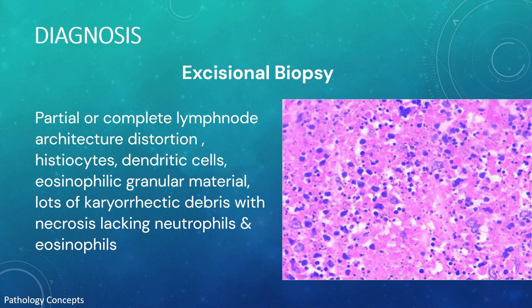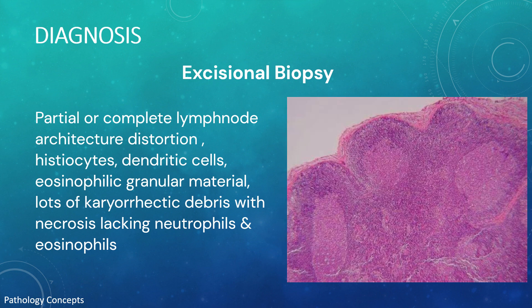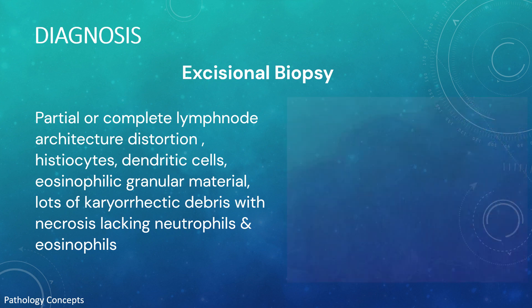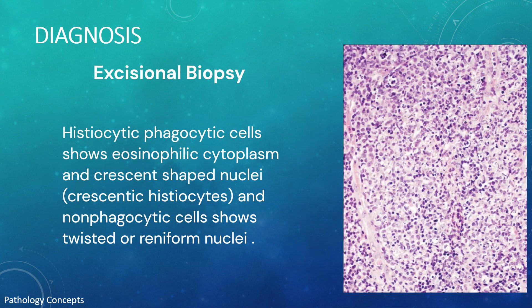Biopsy also shows histiocytes, dendritic cells, eosinophilic granular material, and karyorrhectic debris with necrosis, with a characteristic absence of neutrophils and eosinophils within an expanded paracortical area. Phagocytic histiocytic cells show eosinophilic cytoplasm and crescent-shaped nuclei, while non-phagocytic cells show twisted or reniform nuclei.